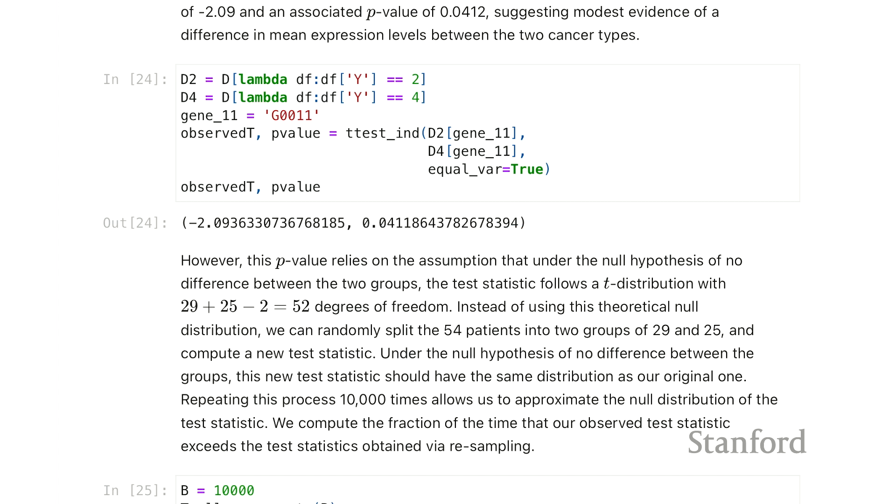Here we've even used this so-called pooled variance by making this argument equal variance equals true. So now when we interpret this p-value and we look to see whether it's less than say 5% or not, we're making some assumptions about the way the data looks.